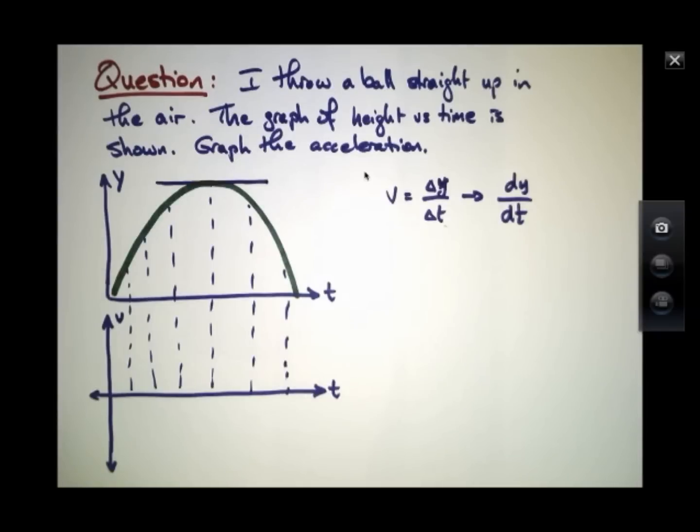That's because the tangent line here is roughly horizontal. In other words, the slope of that tangent line is zero, and the velocity therefore at that time should be zero.